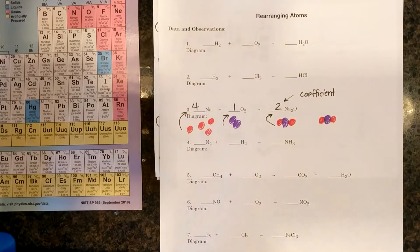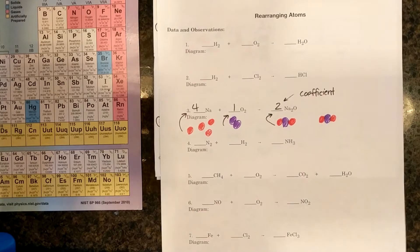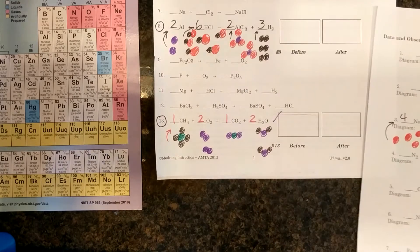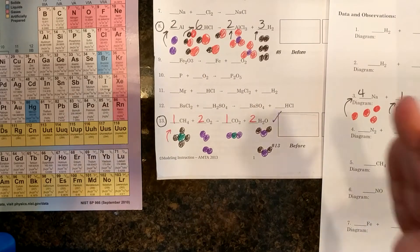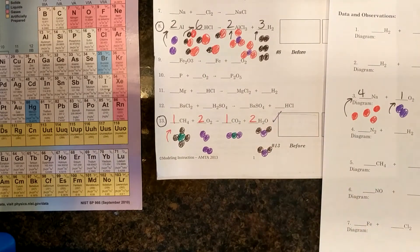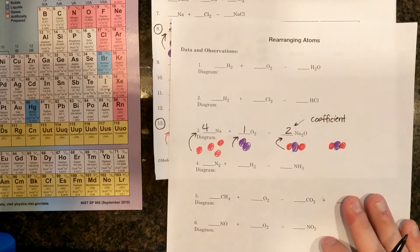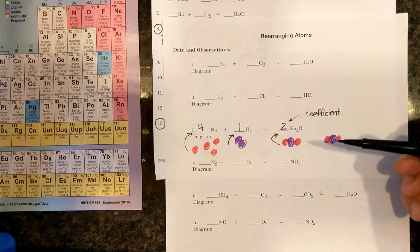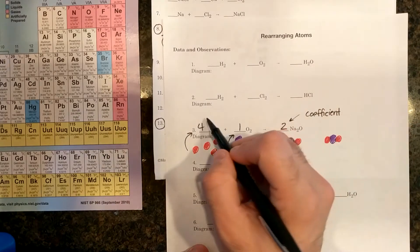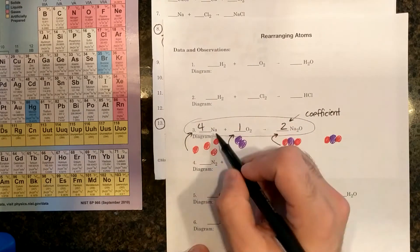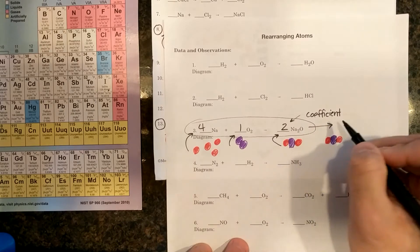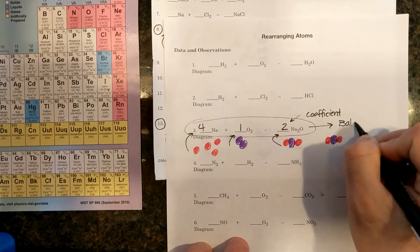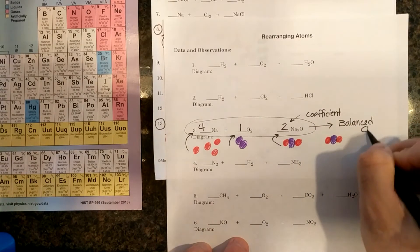All right. So I'm hoping this video was helpful in reminding you on how to balance chemical equations using particle diagrams. Remember, it's kind of like a game where you're going back and forth and you have to add atoms and molecules until you have the same amount on both sides. And then once you do that, then you have to put coefficients in front of each element and compound to write the balanced chemical equation. This 4Na plus 1O2 gives me 2Na2O is the balanced chemical equation.